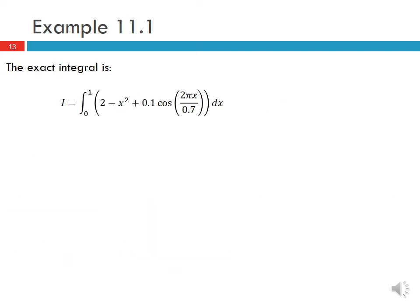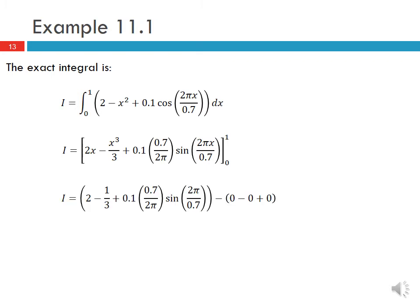The exact integral can be calculated by hand. The antiderivative is 2x − x³/3 + 0.1 × (0.7/(2π)) × sin(2πx/0.7), evaluated between 0 and 1. Plugging in the limits and computing, the exact integral I_exact is equal to 1.6715.